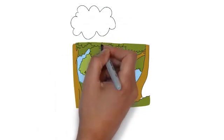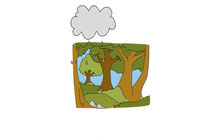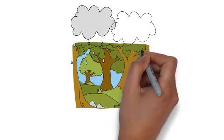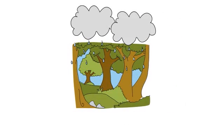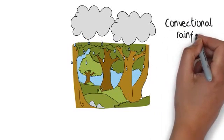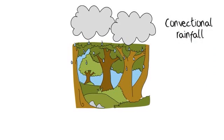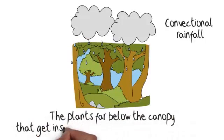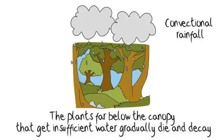The tropical rainforest is an easy example of an ecosystem. In the rainforest it rains daily and heavily. Most of the rain is collected in the canopy or treetops, and by the time it reaches the forest floor it's much less heavy. This is called convectional rainfall, as the rainforest itself creates the rain. Due to the excessive heat and humidity, the rainwater evaporates into the atmosphere, forming clouds for the next day's rain. The plants far below the canopy that get insufficient water gradually die and decay, creating nutrients for the soil and therefore the trees.